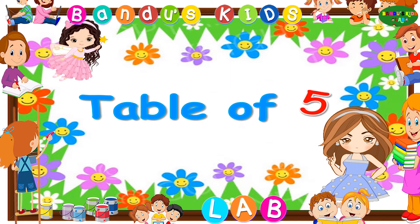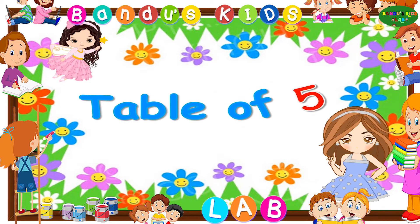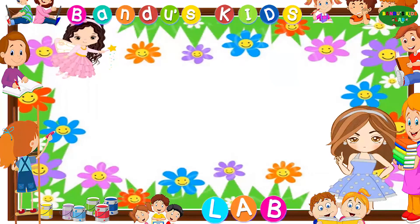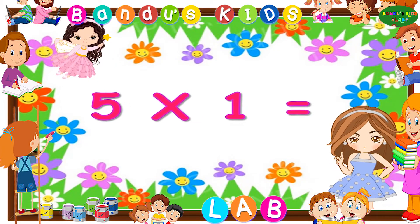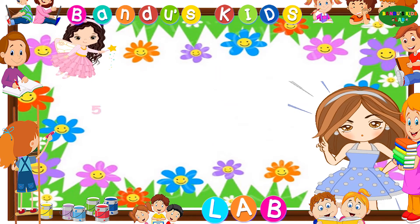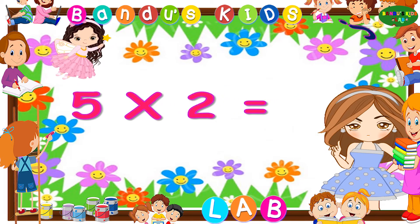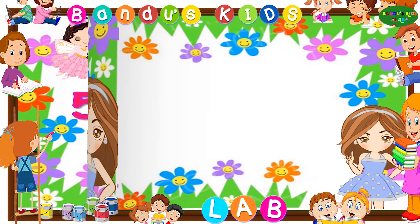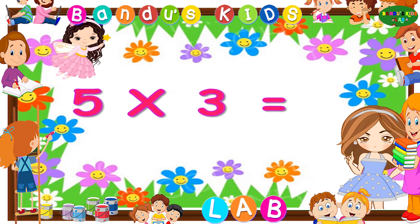Now it's your turn to say the table of five. Table of five. Five ones are five. Five twos are ten.